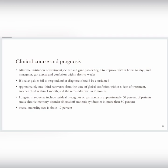Let's talk about clinical course and prognosis. After institution of treatment, some signs such as ocular gaze palsy begin to improve within hours to days. Nystagmus, gait ataxia, and confusion may recover within days to weeks. If oculopathy fails to respond, we should reconsider other diagnoses. Approximately one-third recover from the state of global confusion within six days of treatment, another third within one month, and the remainder within two months. There can be long-term sequelae such as residual nystagmus or gait ataxia in approximately 60 percent of patients and chronic memory disorder, Korsakoff amnesia syndrome, in more than 80 percent. Overall mortality rate is about 17 percent.